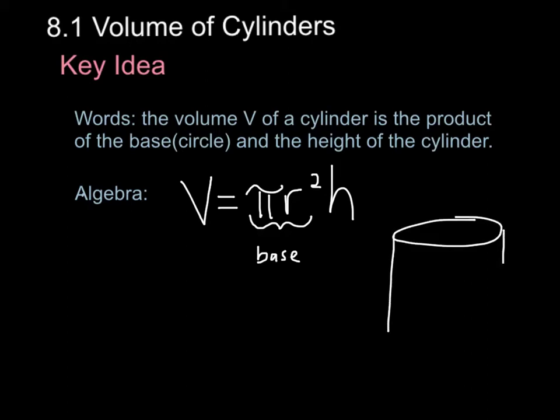So if we drew a picture, which I do want you to draw, this is a really bad drawing. But this right here is the base. The area of the base is the pi r squared. And the height would be the height of the cylinder.